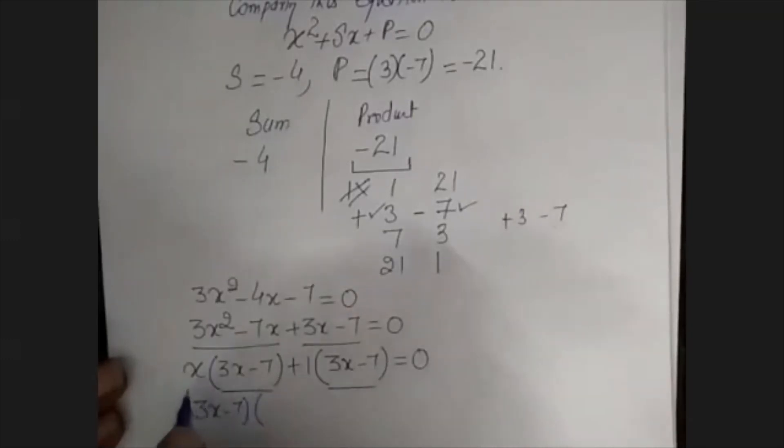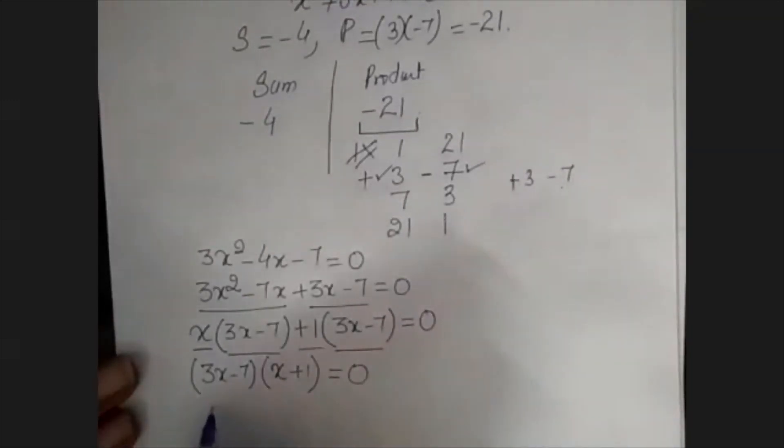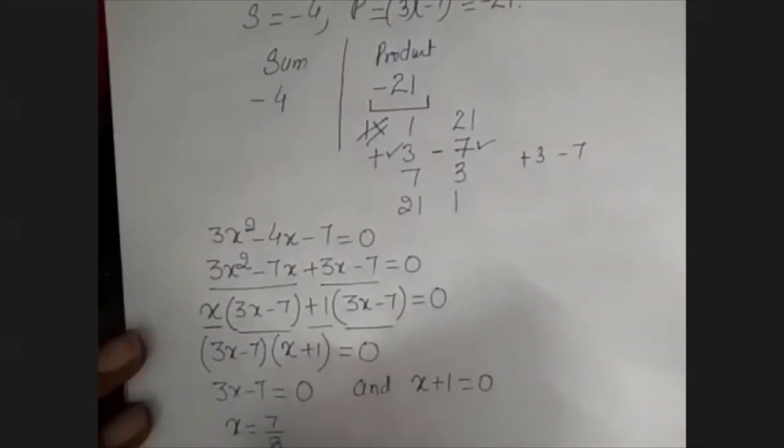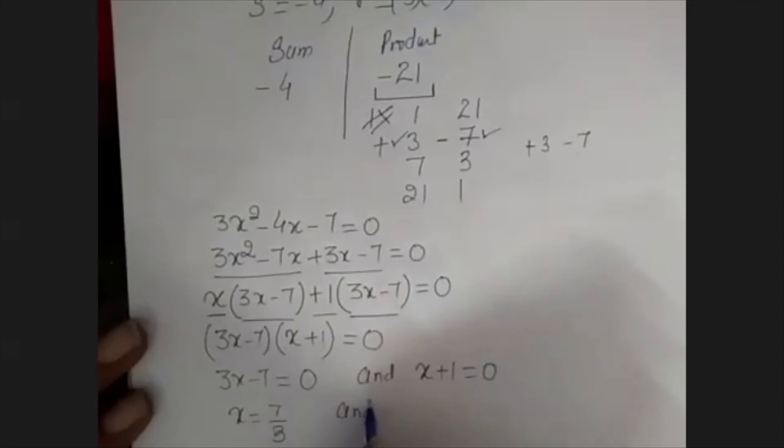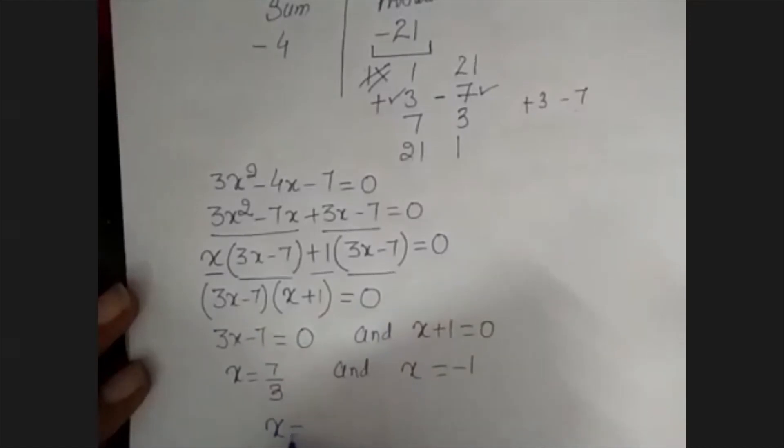Now I take the common term (3x - 7)(x + 1) = 0. Either this term will be equal to 0 or this will be equal to 0. So my x value is 7/3 and my x value is -1. So the answer is either x = 7/3 or x = -1. And this is my answer.